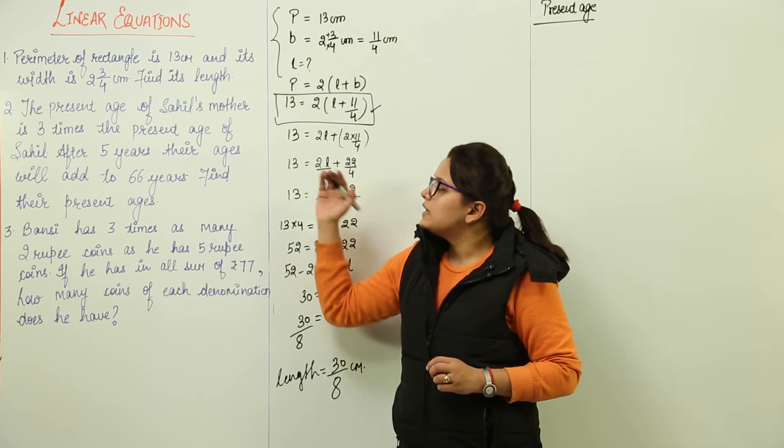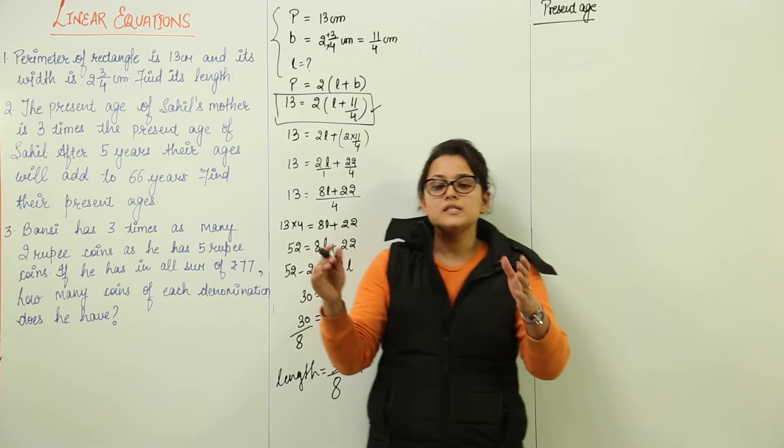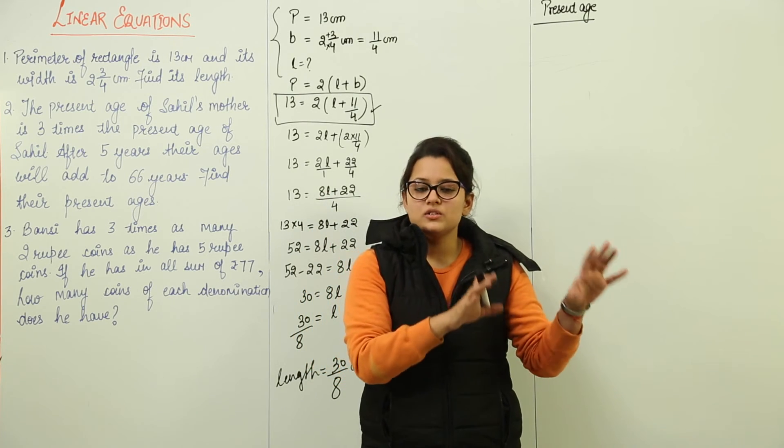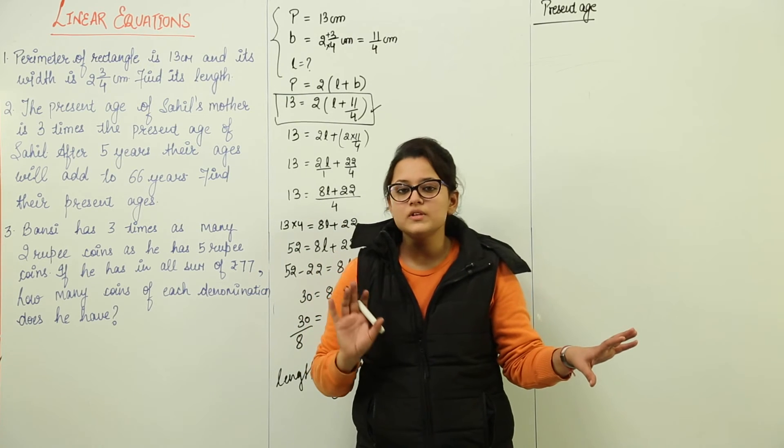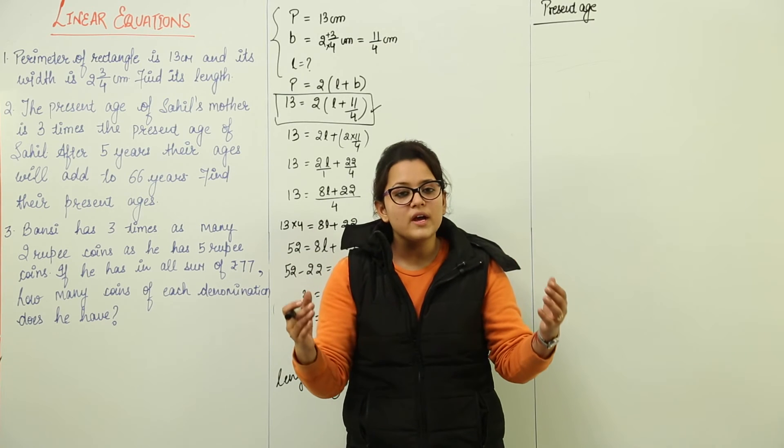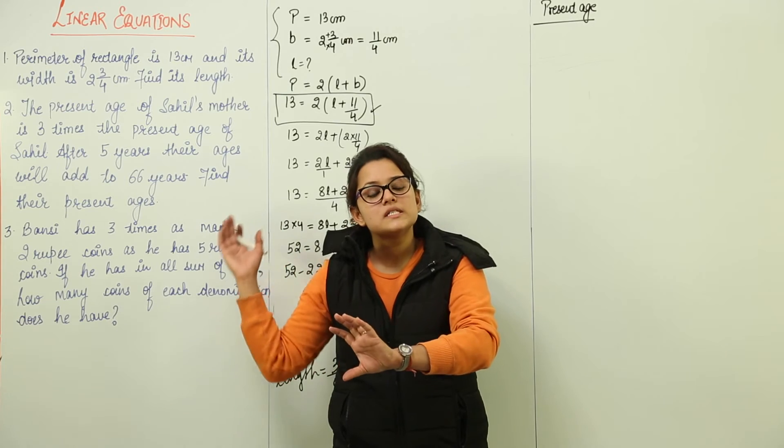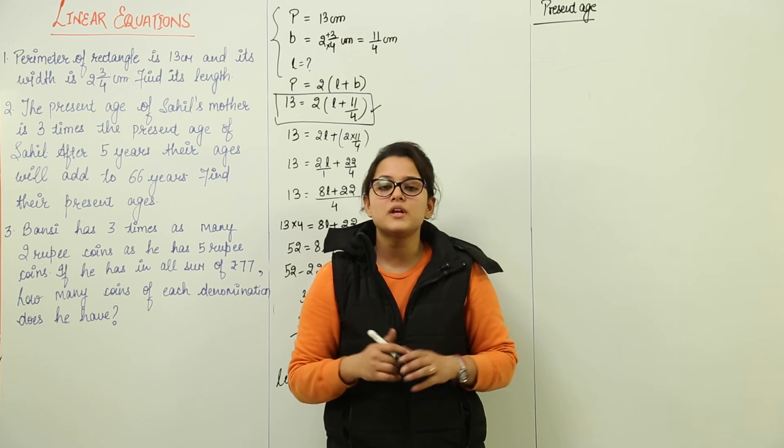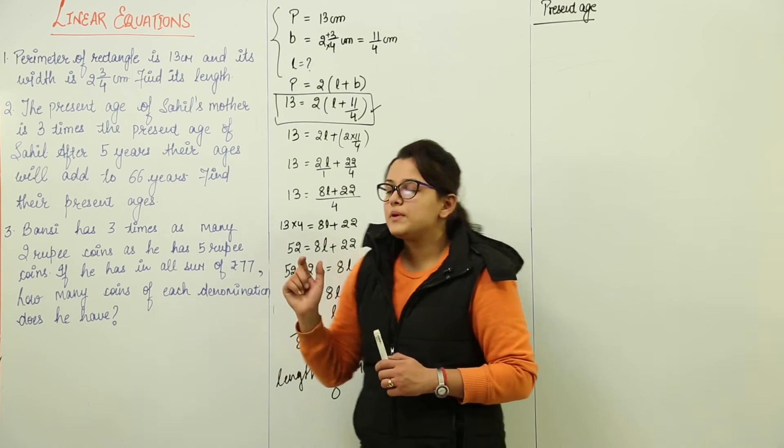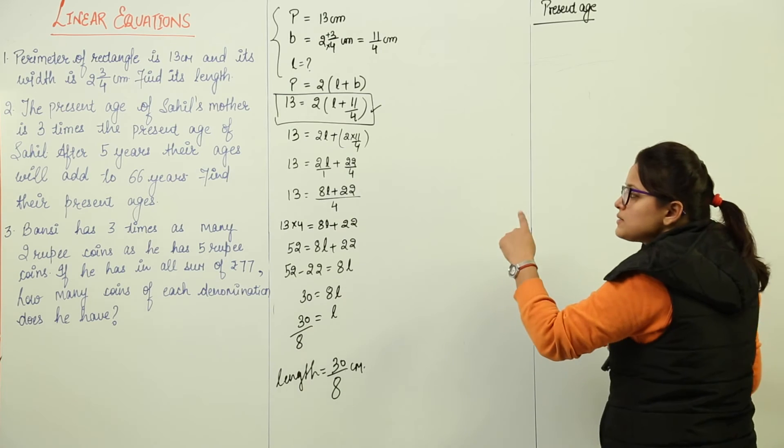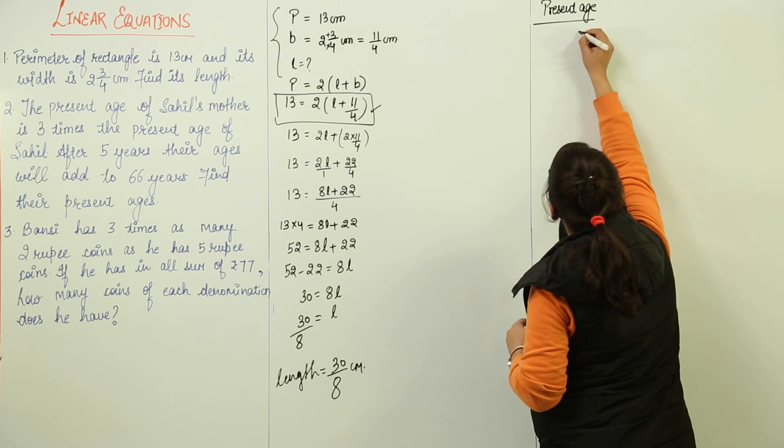After 5 years, their ages will add to 66 years. What do they mean? They say whatever age is Sahil today, his mother is 3 times that of his age. But after 5 years, they checked, the sum of both their ages becomes 66. Now you need to find what are their present ages. So we will start from the present age part first. The present age says that Sahil's mother is 3 times that of his son's age.